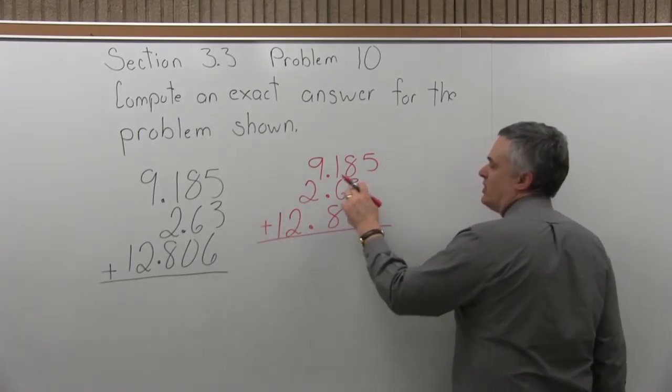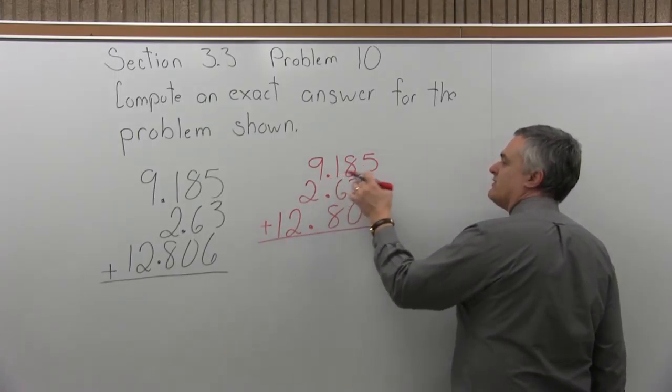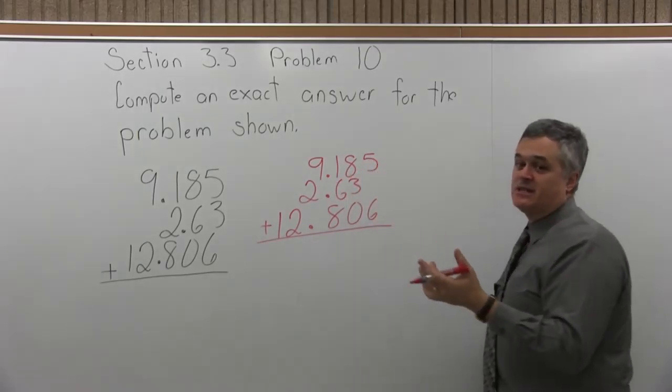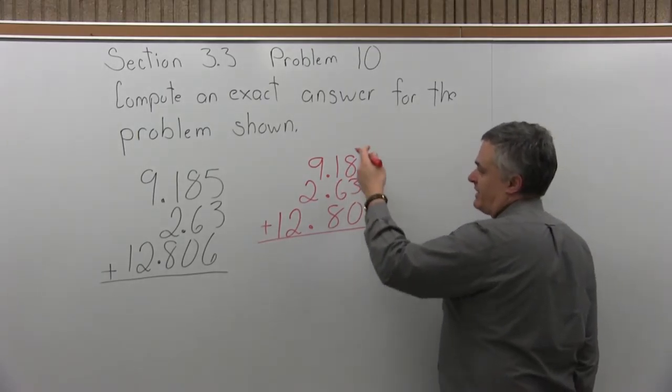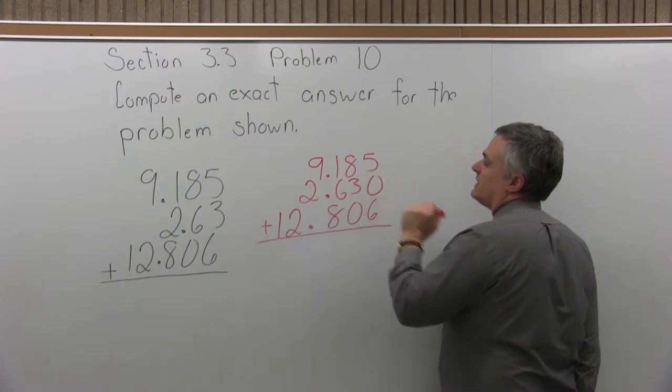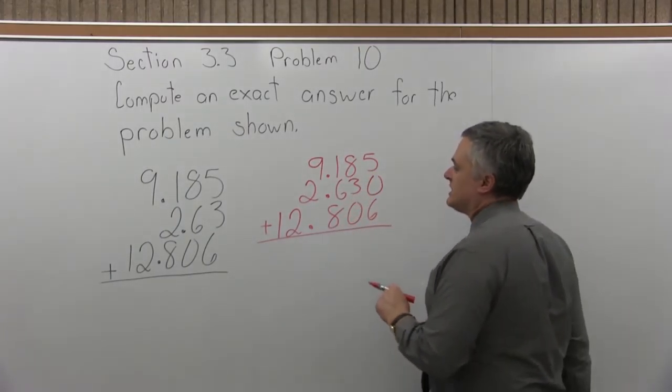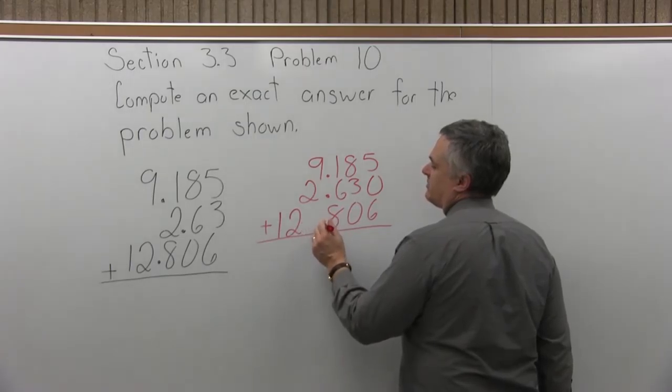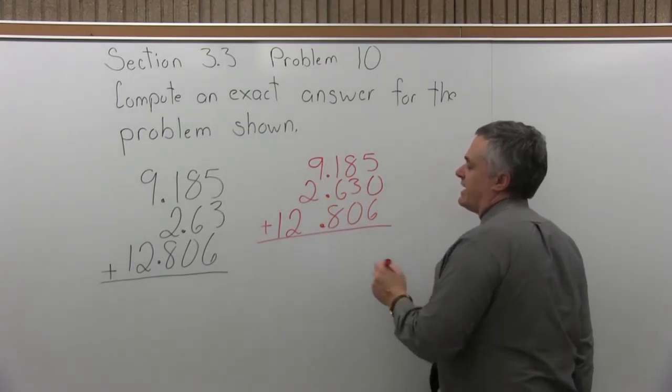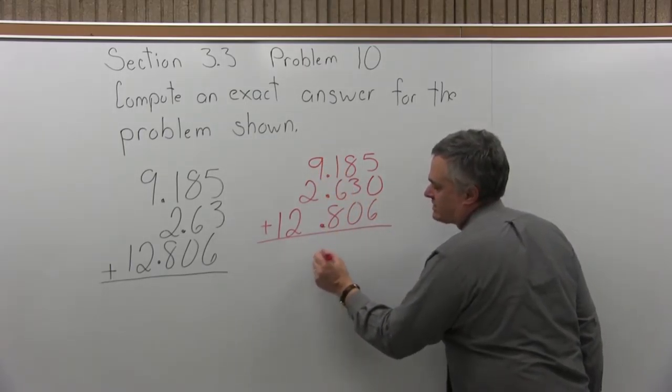Now I can add. And notice the 2.63 doesn't go as far to the right. You can leave that, that's fine. Or if you really like a nice even look, you can fill in that spot with a zero. But the key thing is to make the decimals line up. And then as you find the answer, it's got to stay in line, too.